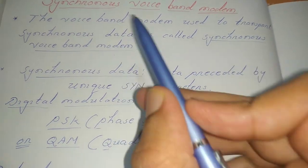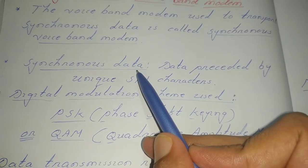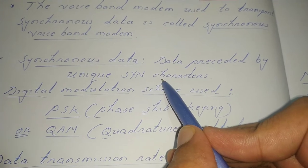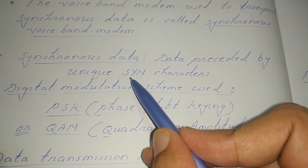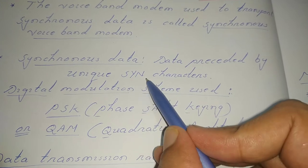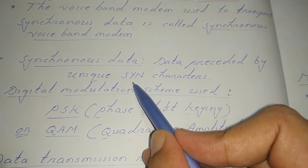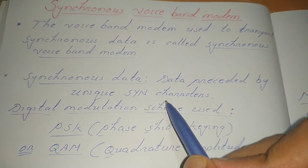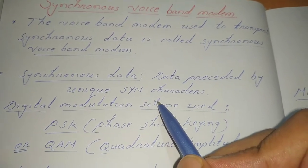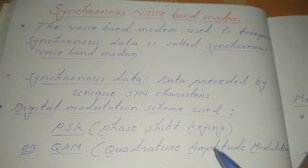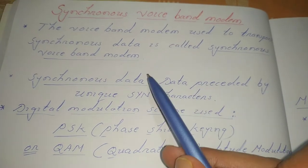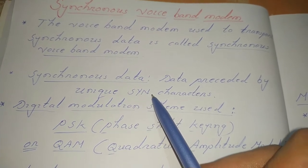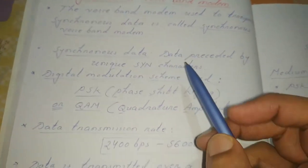So what is synchronous data? In synchronous data, a frame consists of some synchronization characters, written in short as SYN characters. In asynchronous voice band modem, it carries asynchronous data that contains a start bit and stop bit, but in the case of synchronous data it contains synchronization characters.